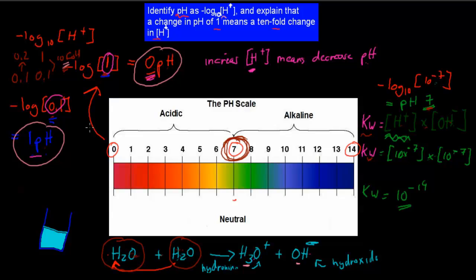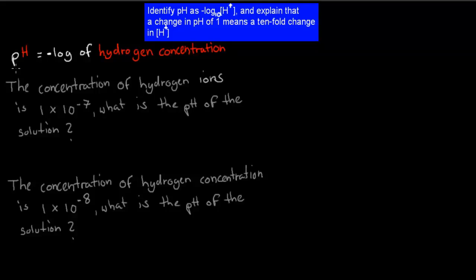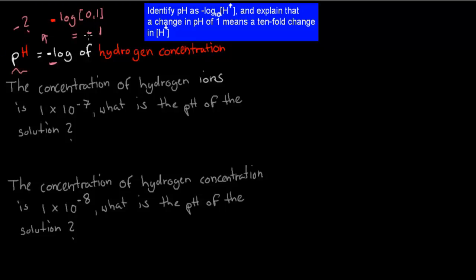Now let's go over a quick question. pH is minus log of hydrogen concentration. Why the minus sign? If you didn't have it, log of 0.1 gives a negative result. So you'd get a pH of minus 1. But with the minus in front, minus times minus equals plus, so it becomes pH of 1. We use the minus to ensure pH is always a positive value.